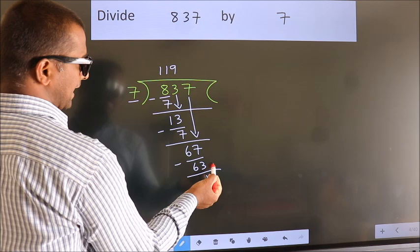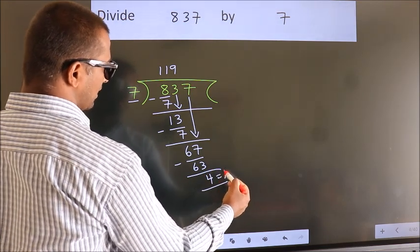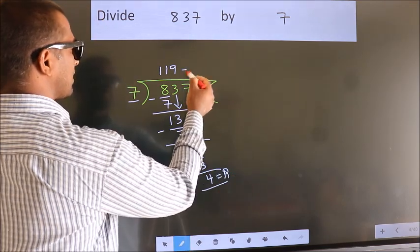No more numbers to bring down, so we stop here. This is our remainder. This is our quotient.